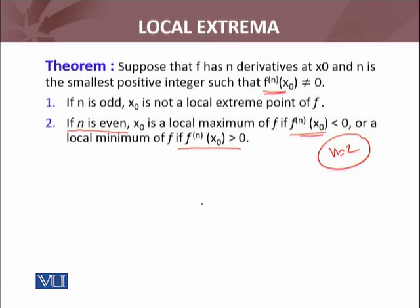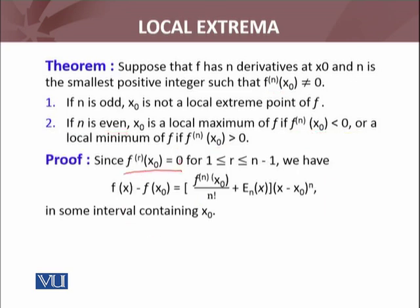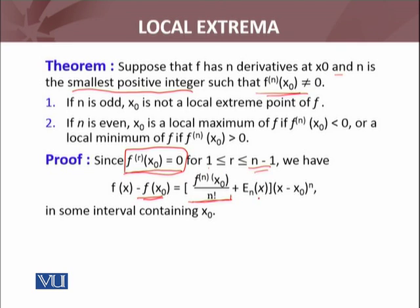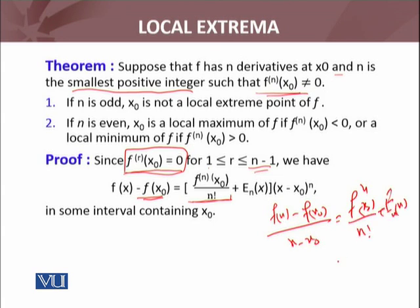इसको हमने prove करना है; we will use that lemma जो के अभी मैंने recall करवाया. Since f^r(x naught) = 0 whenever r is between 1 and n−1 — यह इस condition की वजह से है कि n is the smallest positive integer such that fⁿ(x naught) ≠ 0. So from that lemma, f(x) − f(x naught) = [Taylor polynomial की nth order term] plus eₙ(x)·(x − x naught)ⁿ — बाकी all the terms are 0. So I will consider [f(x) − f(x naught)] / (x − x naught)ⁿ = fⁿ(x naught)/n! + eₙ(x).